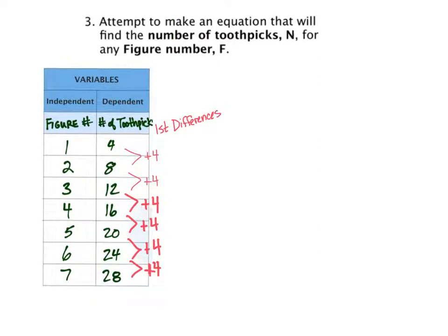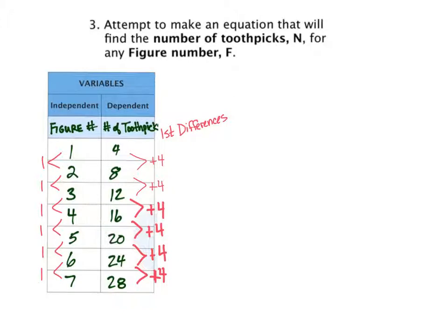Now we should also notice that the figure number is going up by a constant value as well, ultimately going up by one each time is what we're looking for, and that four is a magic number that's going to help us create our equation. Our equation will always begin with the dependent variable because that's the solution we're looking for. So we'll start it with a big capital T and we'll set that equal to in this case four toothpicks for every figure number.